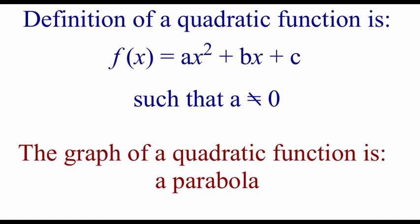Our definition for what a quadratic function is going to be: f of x equals ax squared plus bx plus c. We just need to make sure that that a value on our x squared isn't 0, otherwise we wouldn't have an x squared in there at all. We have to have that x squared for this to be considered a quadratic function. And by now we all know that the graph of a quadratic function is a parabola.